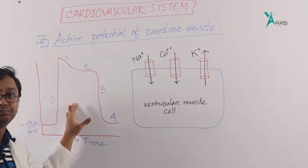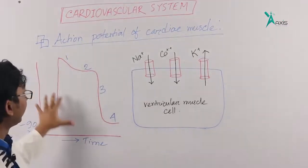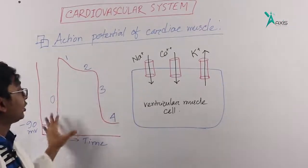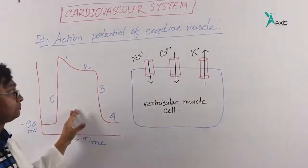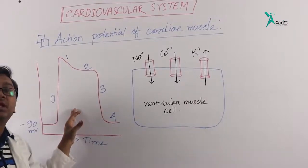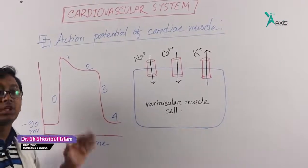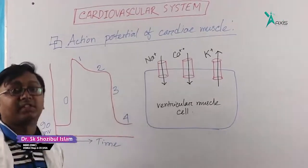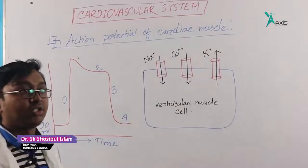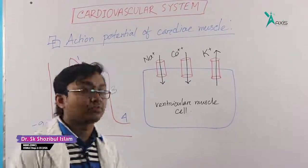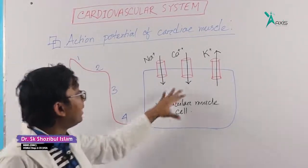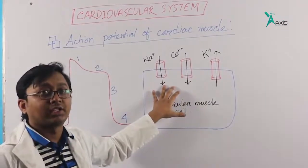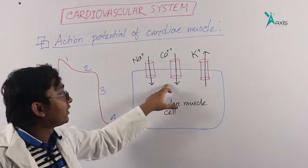What are the phases? There are some phases how an action potential is built up. Ventricular muscle cell has ion channels like sodium, calcium, potassium. These are voltage-gated ion channels.